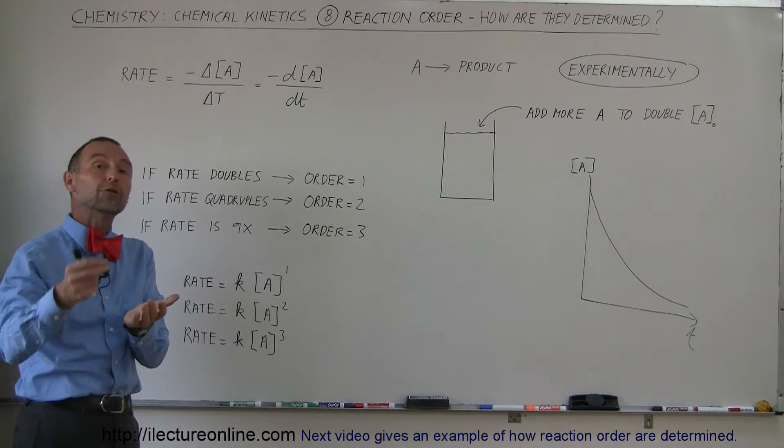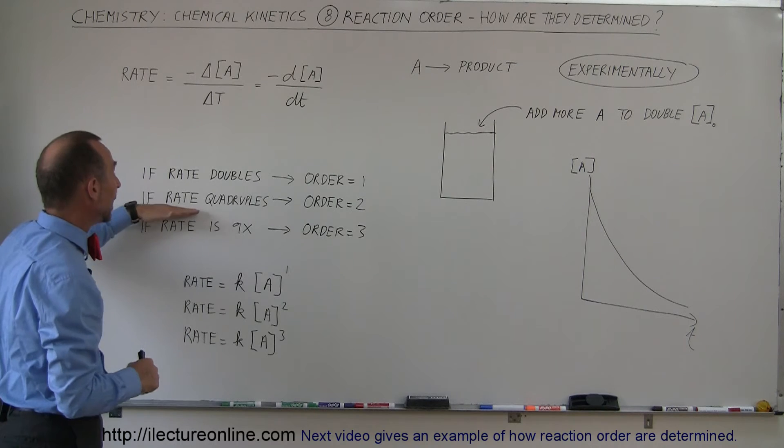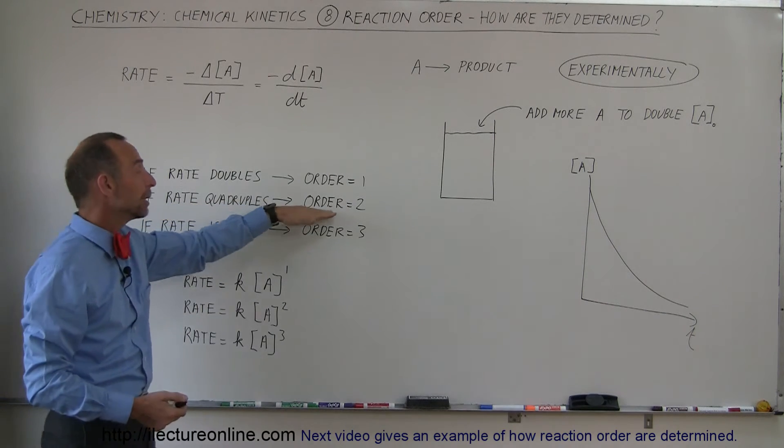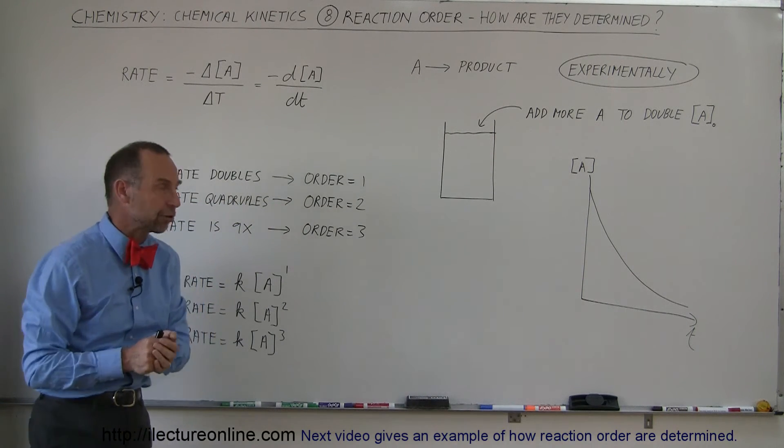If we double the concentration of A and the rate quadruples, then we know that the order with respect to that reactant is two.